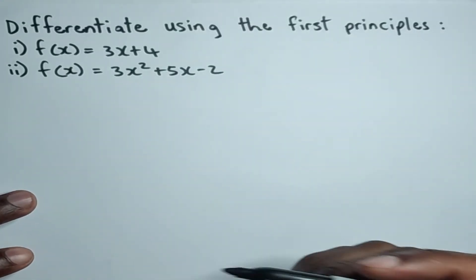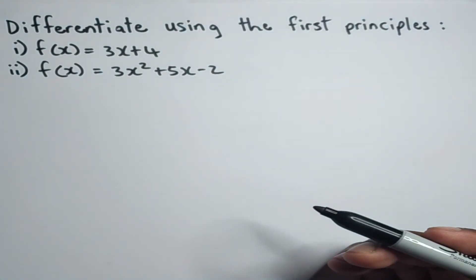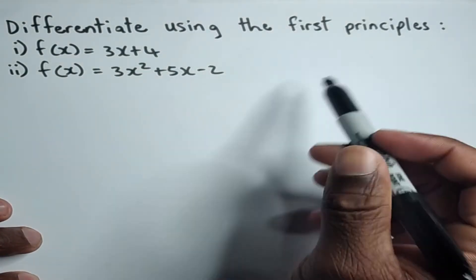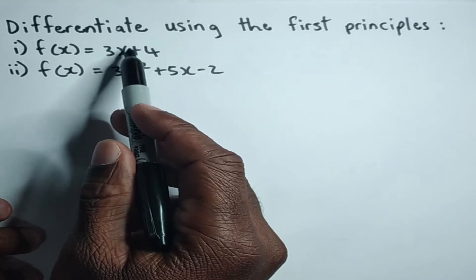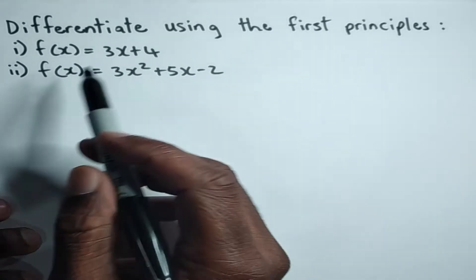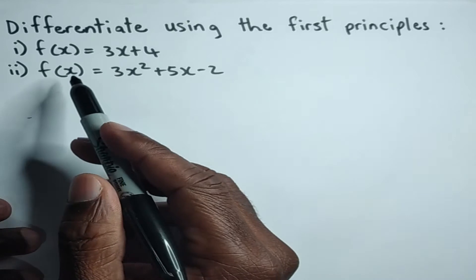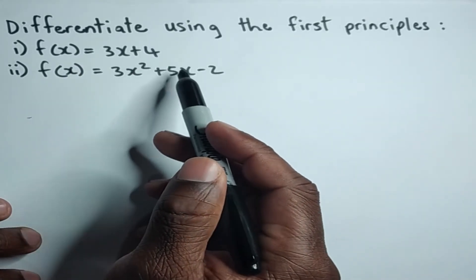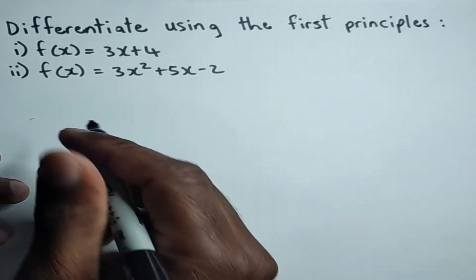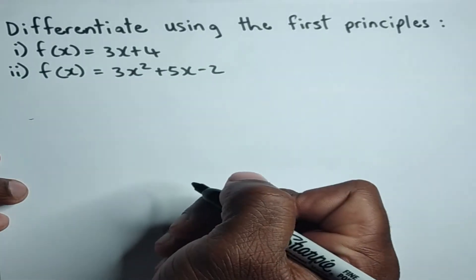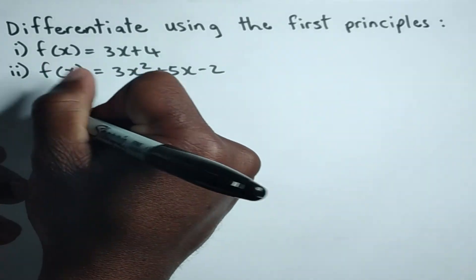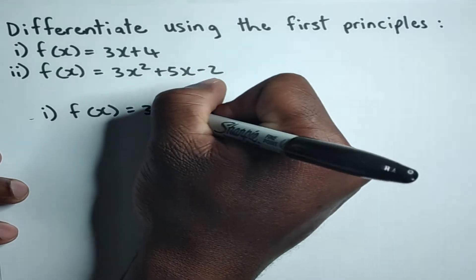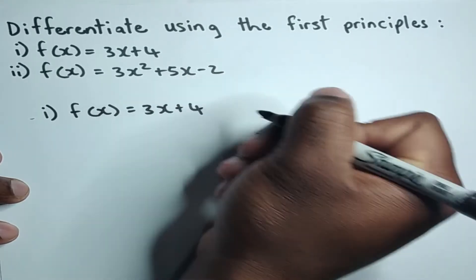Now we want to look at how to differentiate a function using the first principles formula. Here we have two questions: differentiate using first principles — first, f of x equals 3x plus 4, and second, f of x equals 3x squared plus 5x minus 2. We'll start off with the first question.